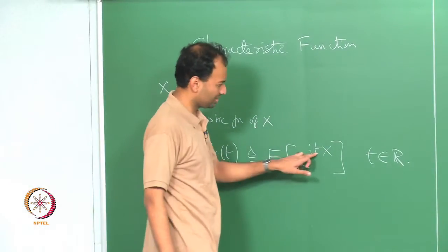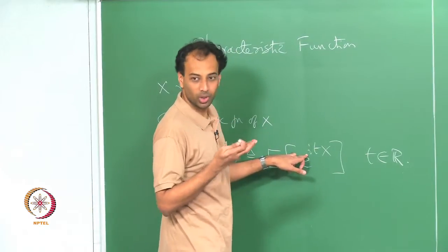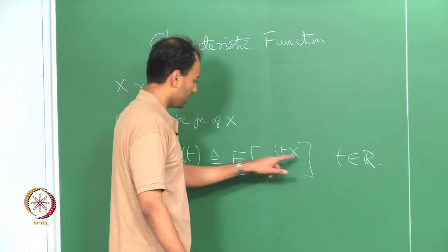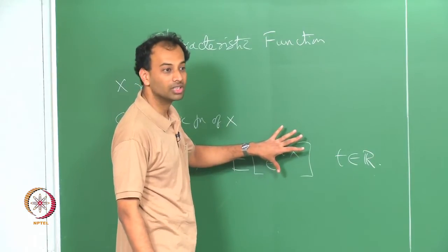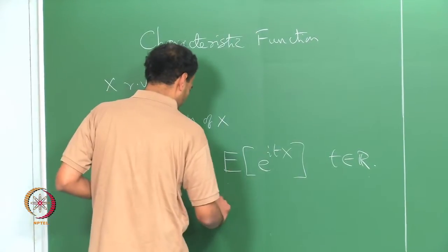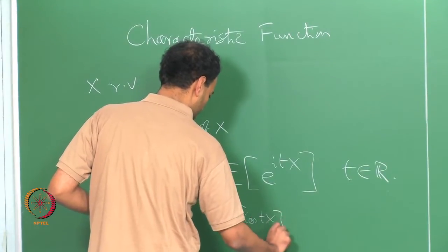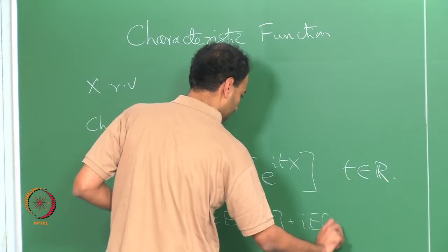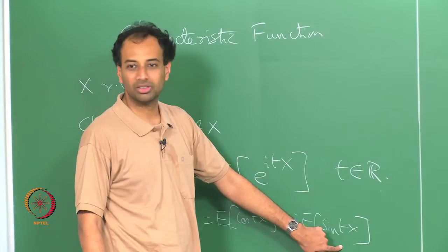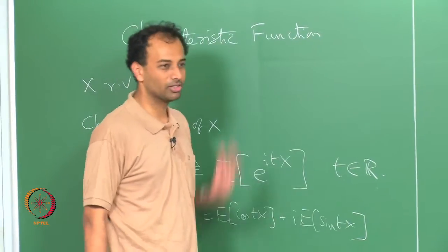So this t is some real parameter, x is your random variable, and i is the square root of minus 1. So e to the power i t x is a complex valued random variable. You can actually take this as expectation of cos(tx) plus i times expectation of sin(tx), where cos(tx) and sin(tx) are random variables parametrized by t. So expectation of cos(tx) plus i times expectation of sin(tx).